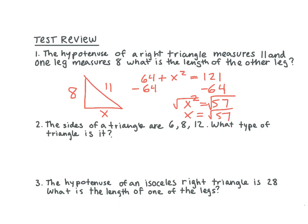Let's take a look at number two. The sides of a triangle are 6, 8, and 12. What type of triangle is it? So what I did was I did 6 squared plus 8 squared equals 12 squared. How did you know 12 was going to be our C? Because it's the biggest.